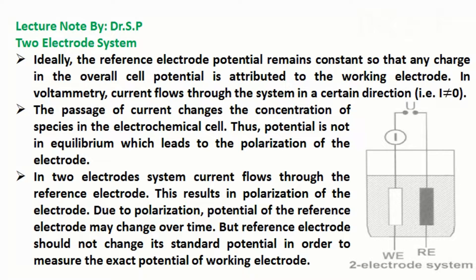The passage of current changes the concentration of species in the electrochemical cell. Thus, the potential is not in equilibrium, which leads to the polarization of the electrode. In a two-electrode system, current flows through the reference electrode, which results in polarization of the electrode.